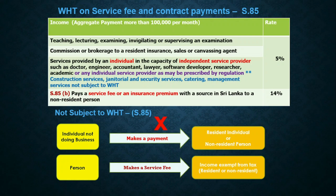The next item is a service fee or insurance premium paid to a non-resident person, for which the applicable withholding tax rate is 14%. As in Section 84 and 84A, there is an exclusion under Section 85.2. Accordingly, if you are an individual not doing a business and making payment to another resident or non-resident person, you need not deduct withholding tax. But if you are an individual who is doing a business, then you have to deduct withholding tax. The second exclusion is when you are making a service payment to a resident individual who is exempted from income tax — then you need not deduct withholding tax, and the same procedure explained under withholding tax circulars will apply.